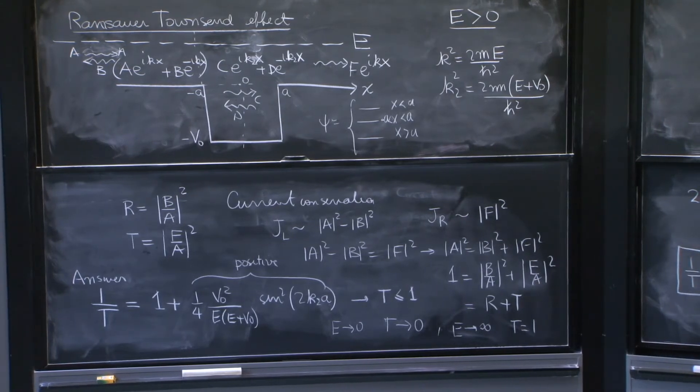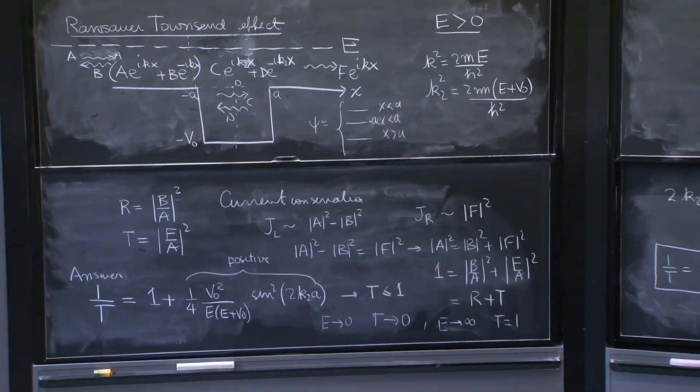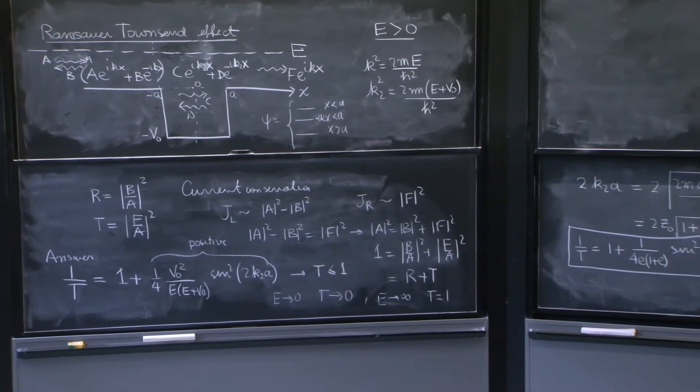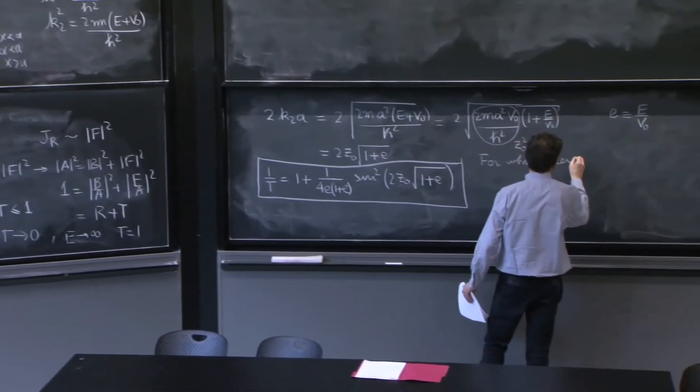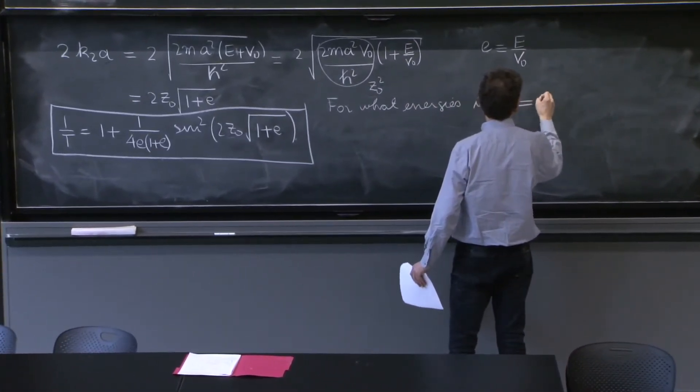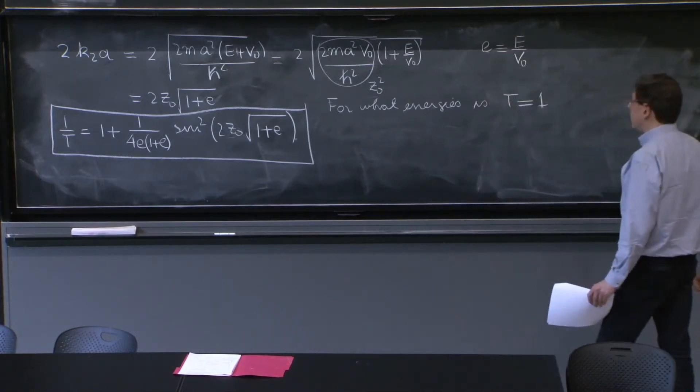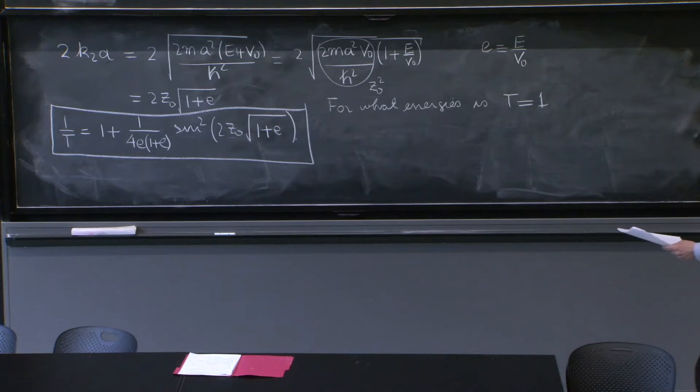So let's see why it is happening, or under what circumstances it happens. So for what energies will we have, for what energies? Energies is t equal to 1.